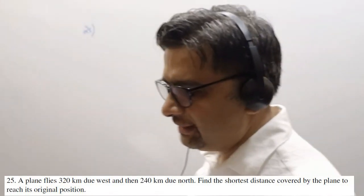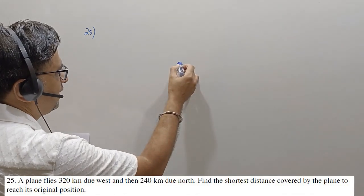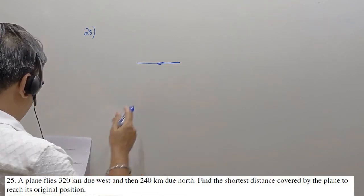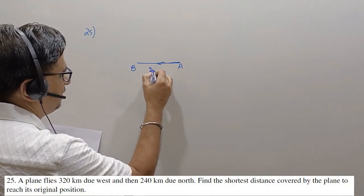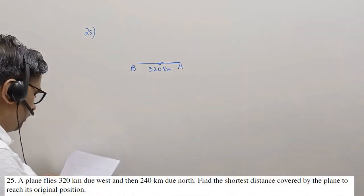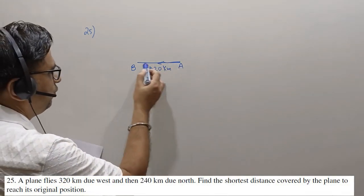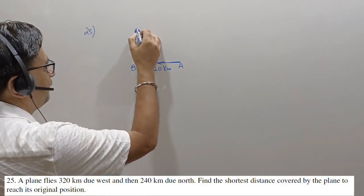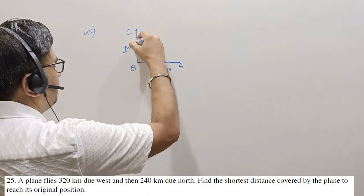Question number 25. A plane flies 320 kilometers due west. If you take any point and travel west, it would be this direction. So this is the direction the plane flies. Let A be the original position and B be the position where the westward journey ended. This is 320 kilometers. And then 240 kilometers due north — from this point it flew 320 km west, and then it takes a north direction.